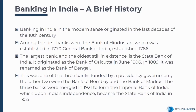Initially India had three important banks: Bank of Bengal, Bank of Madras, and Bank of Bombay — representing east, south, and west zones. These three merged to form the Imperial Bank of India, funded by the government. The Imperial Bank of India was then renamed State Bank of India. All these banks are managed by RBI — the Reserve Bank of India — which is the Apex Bank of India.